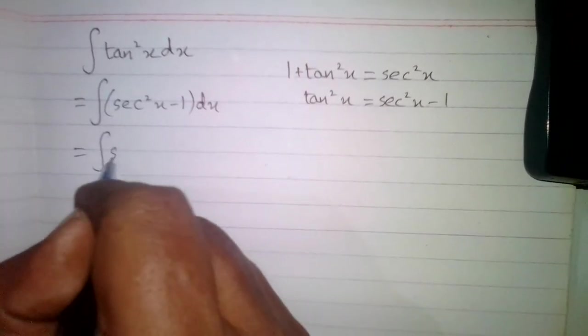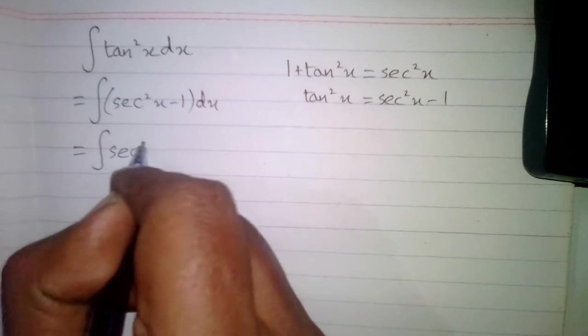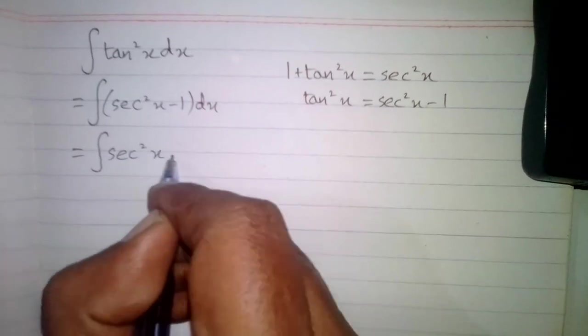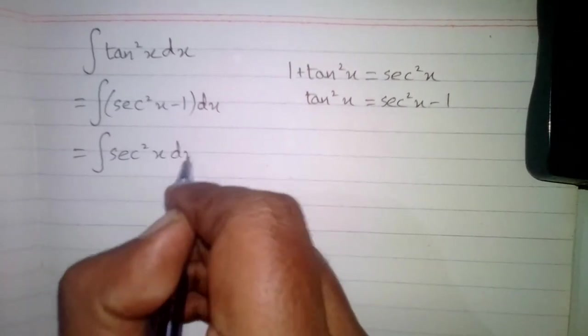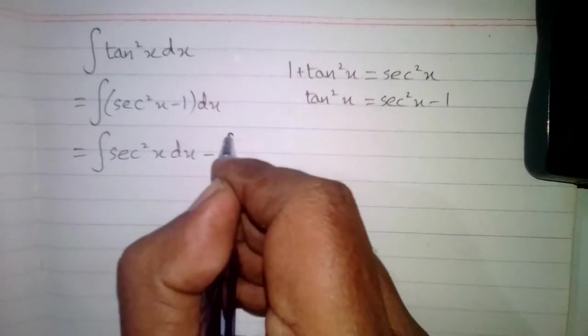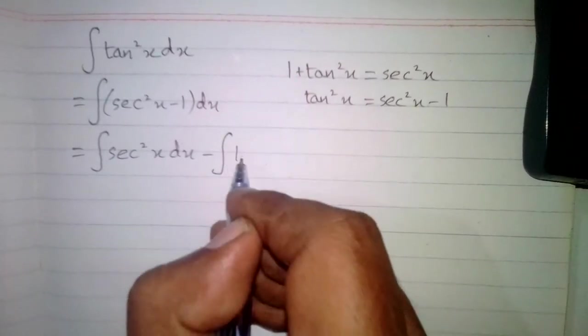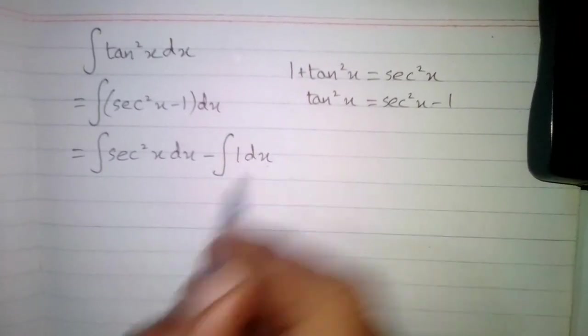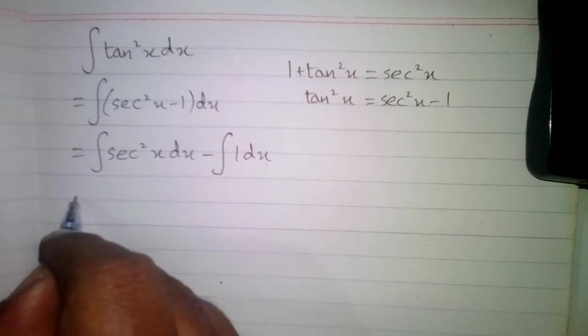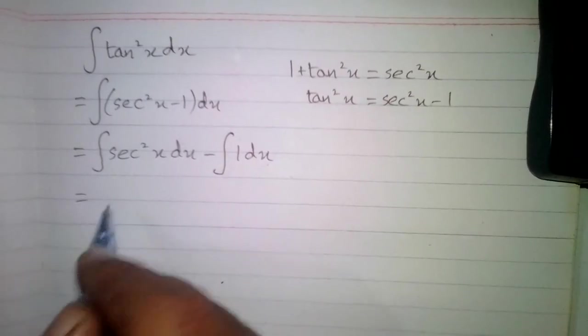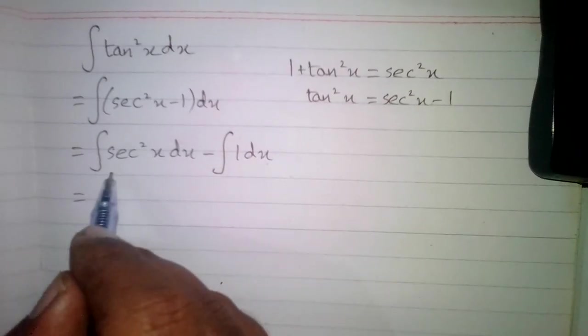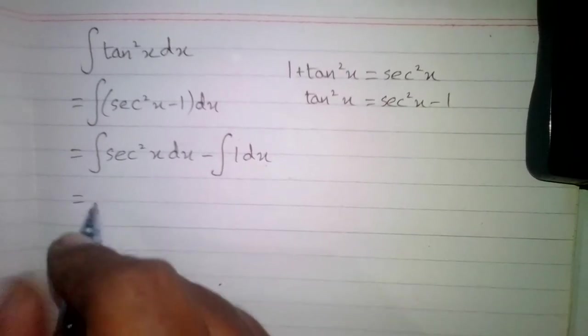So we have the integral of sec²x dx minus the integral of 1 dx. We know that the integral of sec²x is tan(x).